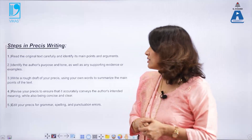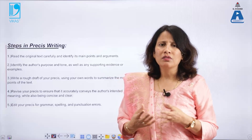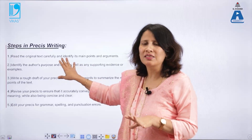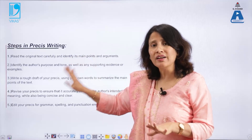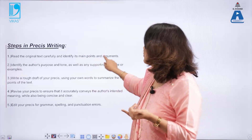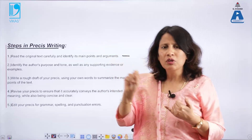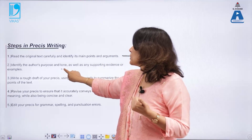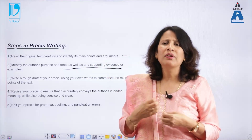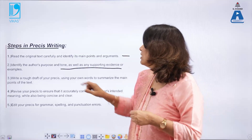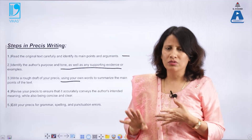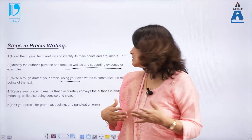Now, what are the steps? Before you practically jump into writing, you should know the technicalities — just as you must know the techniques of swimming before jumping into a pool. First, read the original text carefully and identify its main points and arguments. Note them down with your pen. Identify the author's purpose and tone as well. If supporting examples are given, note those down too. Then write a rough draft of your Précis — no final Précis can be written in one go; there must be a rough draft first. Then summarize the key points.